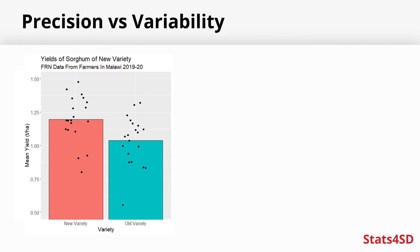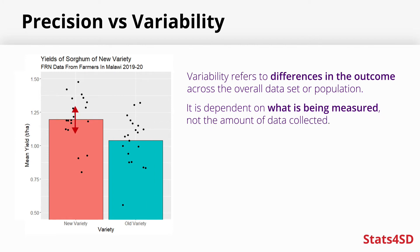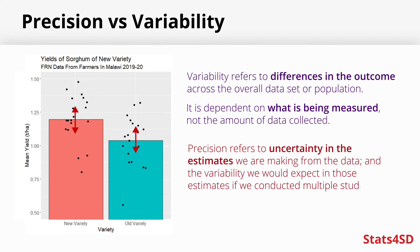There is quite a key difference between precision and variability. Variability refers to differences across the data that we have, which we extrapolate up to the whole population — so some farmers having higher yields and some having lower yields. The level of variability is not dependent on how much data we have, but on what it is we are measuring. Precision refers to the uncertainty in the estimates we're getting from the data. If we had more farmers in our trial, we might have more precise estimates — more certain that 15% was indeed accurate.